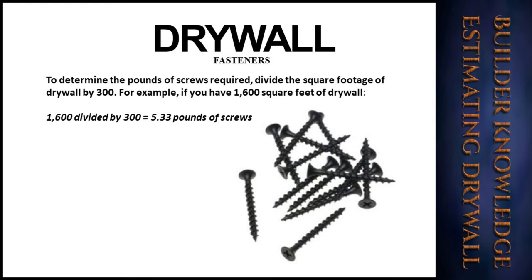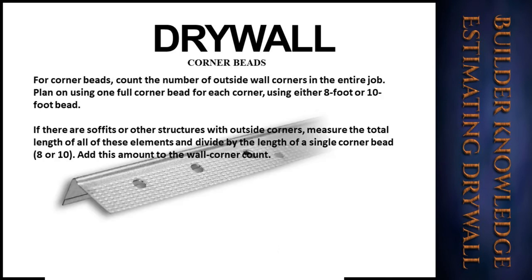To determine the pounds of screws required, divide the square footage of drywall by 300. For example, if you have 1,600 square feet of drywall, take 1,600 divided by 300, which gives you a total of 5.33 pounds of screws.